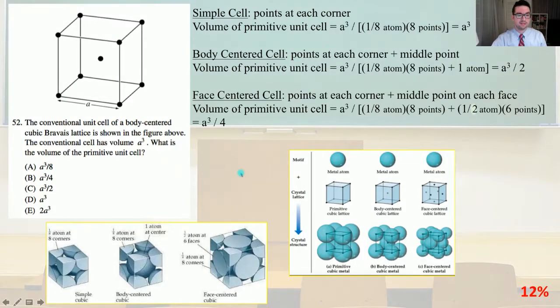Number 52, the conventional unit cell of a body centered cubic Bravais lattice is shown in the figure above. The conventional cell has volume a³. What is the volume of the primitive unit cell? A simple cell has points at each corner and the volume of the primitive unit cell equals a³ divided by (1/8 atom times 8 points) equals a³.